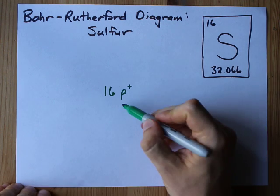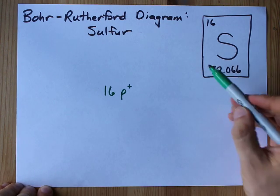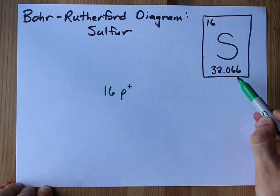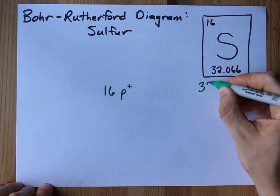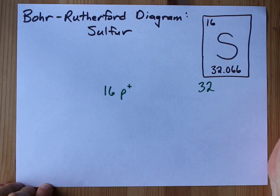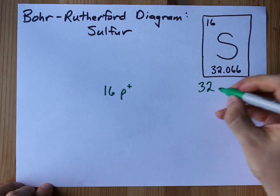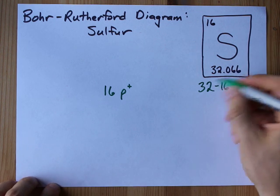And to get the number of neutrons, which are also in the nucleus, I take the atomic mass, I round it to the nearest whole number, that's 32, I'm rounding down here, and I take away the number of protons, which was 16.